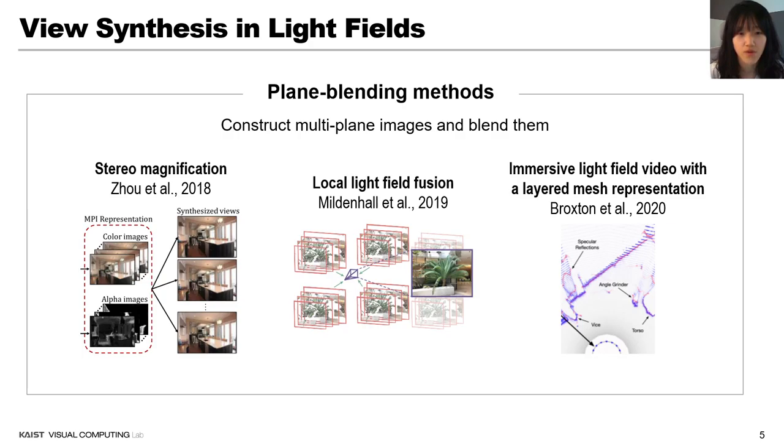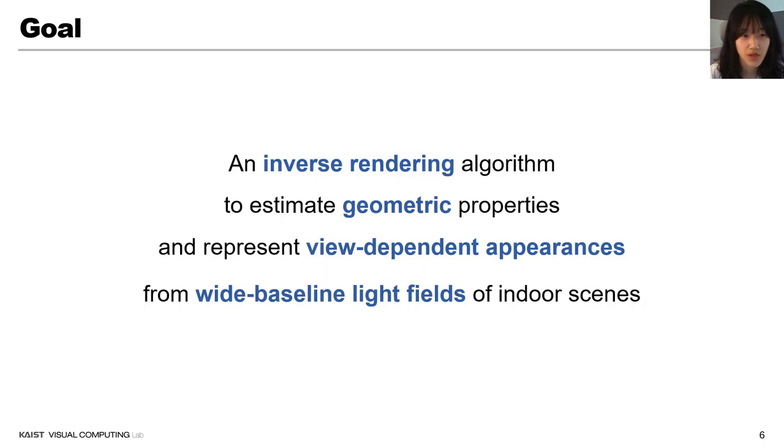Plane blending methods are effective for detailed view synthesis. However, as they force to bake all of the reflection and appearance properties into the geometric representation, their applications are hardly reachable to scene addition or relighting. In this work, we propose an inverse rendering algorithm to estimate geometric properties and represent view-dependent appearances from wide baseline light fields of indoor scenes.